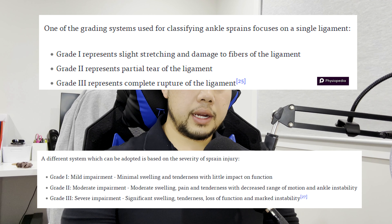Each grade has a different recovery time, though the treatment is relatively the same. A grade one can take between three to six weeks to return to sport, a grade two can take anywhere between six to eight weeks, and a grade three can take anywhere between three to four months. Keep in mind these are rough guidelines — it isn't exact for each person and depends on how well the person recovers.